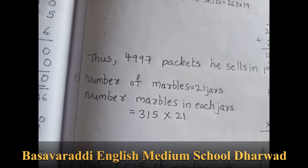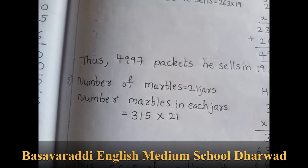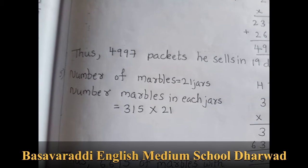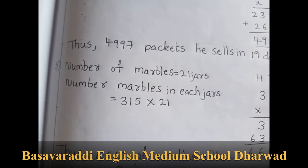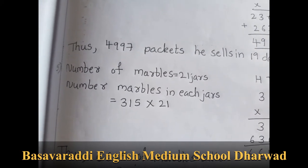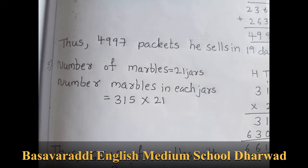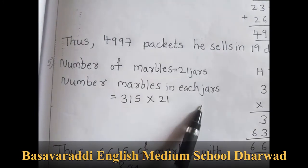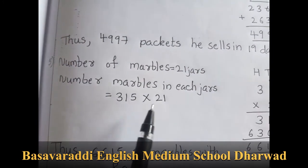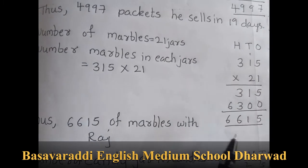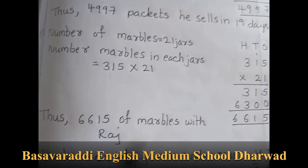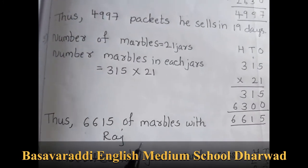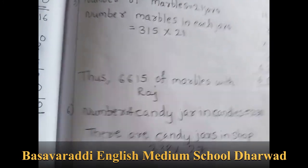Fifth one: Raja has 21 jars full of marbles. There are 315 marbles in each jar. Find the total number of marbles with Raja. So you multiply 315 into 21. The answer is 6615. Thus 6615 marbles are with Raja.